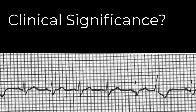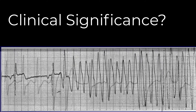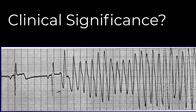Clinically, PVCs typically require no intervention, but they can be significant if they happen frequently enough to lower cardiac output. Multifocal PVCs are more serious than unifocal PVCs, because they reflect a greater area of irritability in the ventricles and a greater risk of progressing to a lethal rhythm. More frequent PVCs also increase the chance of an R-on-T phenomenon occurring, where the early ventricular impulse lands directly on the vulnerable repolarization phase, and could result in VTAC or even V-fib.